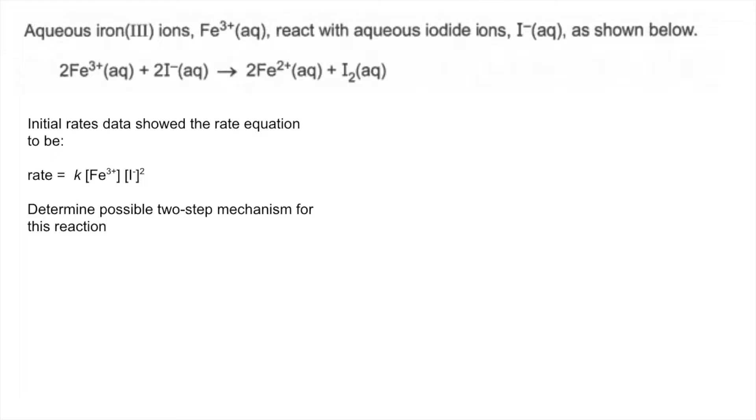The first thing we can do is get the species in the rate determining step from that rate equation. So the rate determining step has got to have one mole of Fe3+ and two moles of I- from the orders.